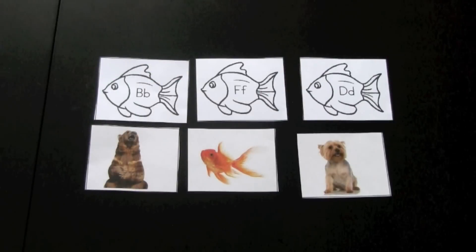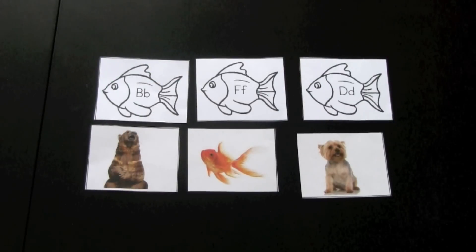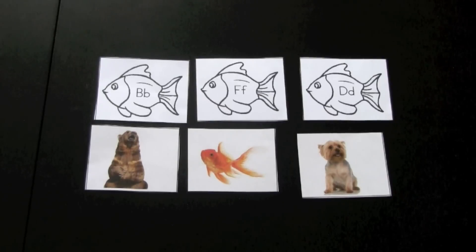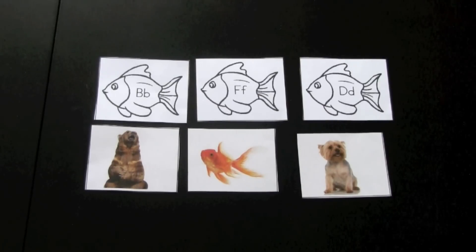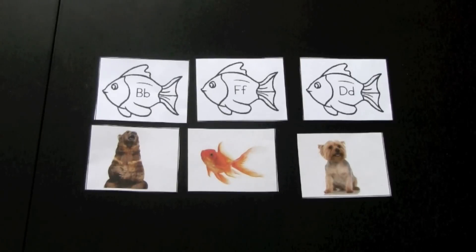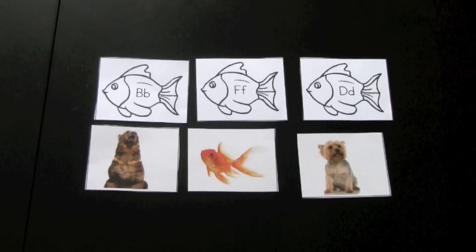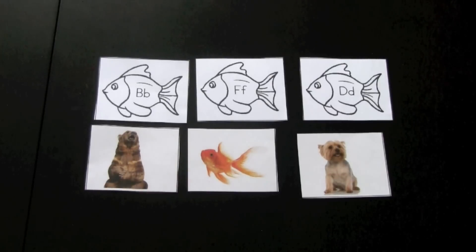This is called the alphabet fishing game. Magnetic tape would be attached to each of the letter fish, and there would be a fishing rod with a magnet attached at the end. The children would be fishing for the alphabet letters. Once they have chosen an alphabet letter, it would be matched with an alphabet picture card.